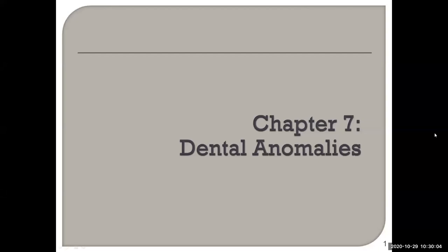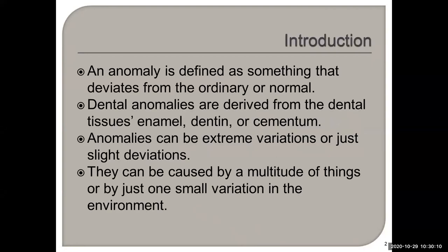Let's go through chapter seven now — dental anomalies. An anomaly is defined as something that deviates from ordinary or normal. Dental anomalies are derived from the dental tissues: enamel, dentin, as well as cementum. Anomalies can be extreme variations or just slight variations.